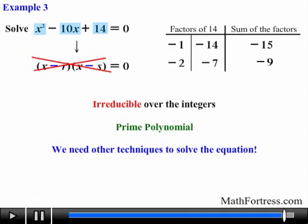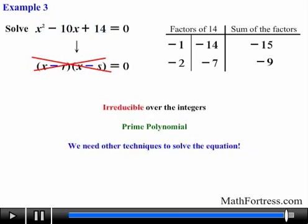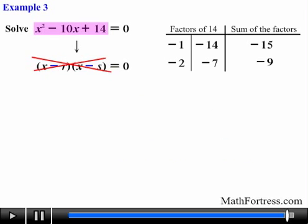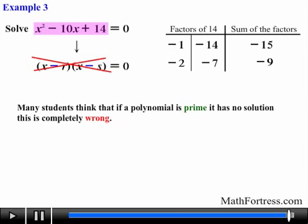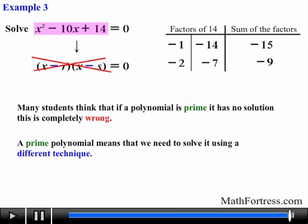For now, this equation is not factorable over the integers but can be solved nonetheless. Many students think that if a polynomial is prime it has no solution — this is completely wrong. A prime polynomial means we need to solve it using a different technique, so don't assume it has no solution if you were unsuccessful in factoring the equation. Alright, in our next video we will go over slightly more challenging examples.